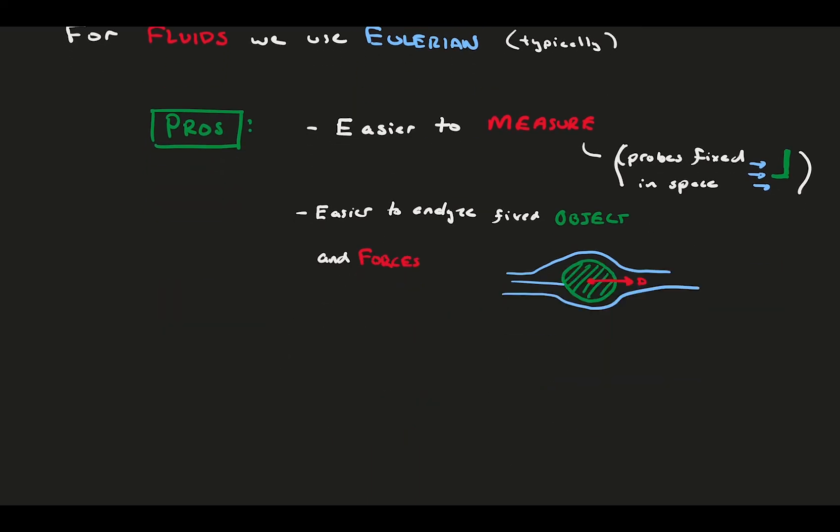However, the Eulerian point of view isn't all good. Particular flaws in the Eulerian perspective are that the math is a bit harder, which leads to more complicated governing equations, as we'll see later in the course. Specifically, we have to work with something like the material derivative, which is a bit tougher to work with than the regular time derivative.